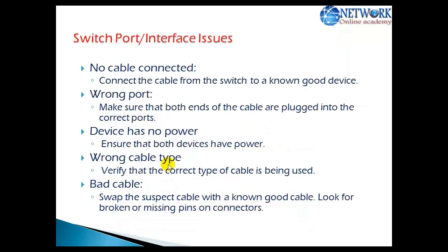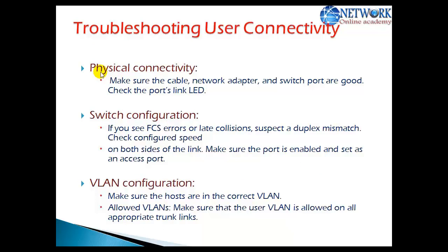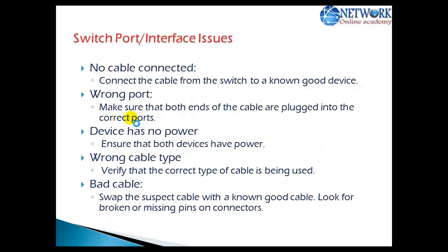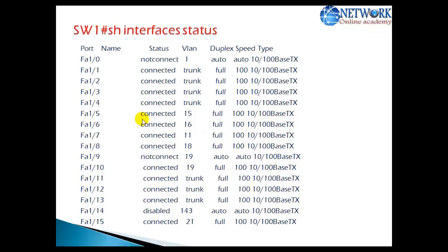These are the possible physical connectivity issues gathered in one place so we can check each one and make sure everything is correct. Once you confirm your physical connectivity is fine, there might be switch configurations affecting communication, such as late collisions due to duplex mismatch. VLAN configurations will be discussed in the next video. For now, we'll focus on two types of issues: physical connectivity and switch configurations. There are some very useful commands for troubleshooting, especially the 'show interface status' command on switches.